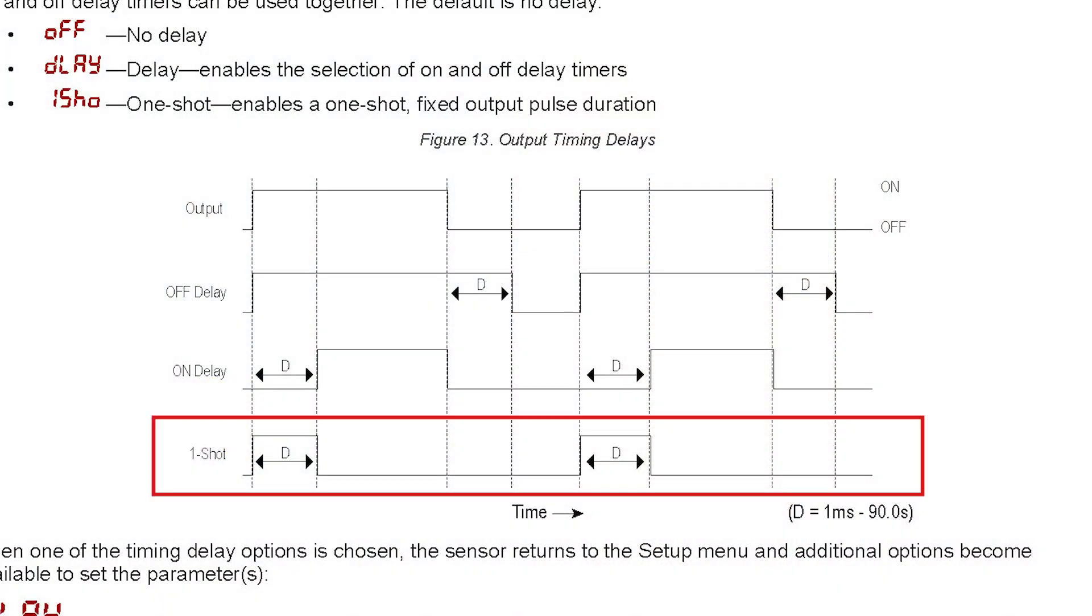One-shot logic keeps the output signal on for a set amount of time before turning off. The signal will not activate again until the detection conditions are cycled.